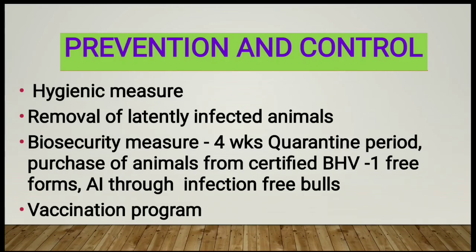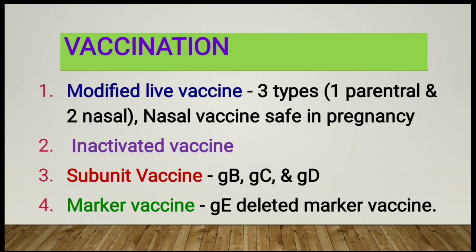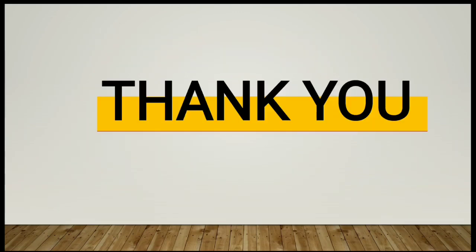For prevention and control, hygienic measures can be used to control many diseases, along with removal of latently infected animals from the herd. Biosecurity measures include a four-week quarantine period for any animal coming from another place or infected area, and purchase of animals from certified bovine herpes virus 1-free farms only. AI should be done through certified free bulls only. Vaccination programs can also be implemented: modified live vaccine administered via parenteral or nasal routes — the nasal vaccine is safe in pregnancy. Inactivated vaccines can also be used, subunit vaccines containing glycoproteins B, C, and D, and marker vaccines using glycoprotein E-deleted strains.